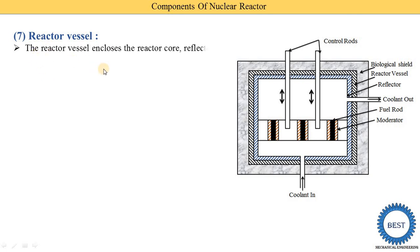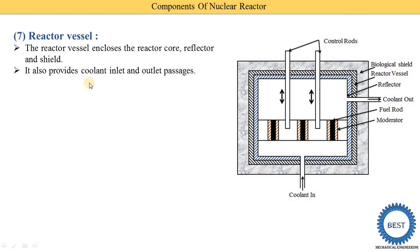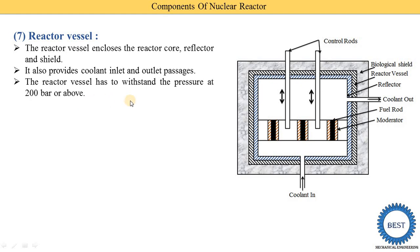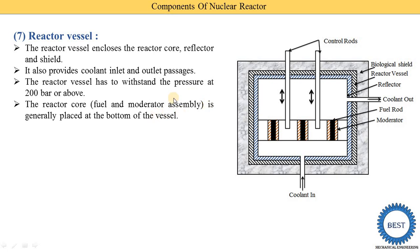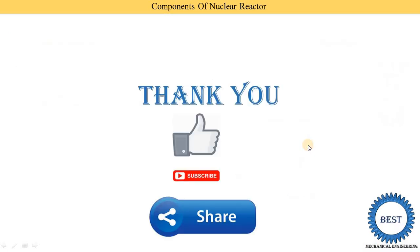The last component is the reactor vessel. The reactor vessel encloses the reactor core, reflectors, and shield. It also provides coolant inlet and outlet passages. The reactor vessel has to withstand pressures of 200 bar or above. The reactor core — meaning the fuel and moderator assembly — is generally placed at the bottom of the vessel.